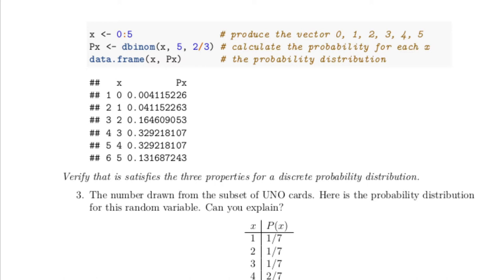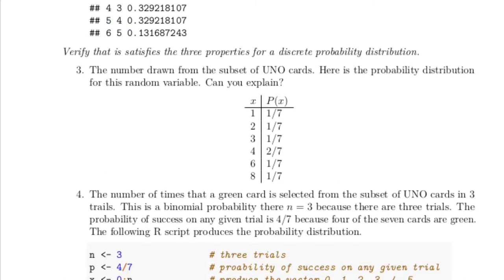Reading the data frame: the probability of getting zero fours is a little more than four tenths of a percent. The probability of getting exactly one is that same amount. The probability of getting two fours in five spins is about 16%. The probability of getting three fours is almost 33%. The probability of getting four fours is again about 33%. And the probability of getting all five fours is 13%.